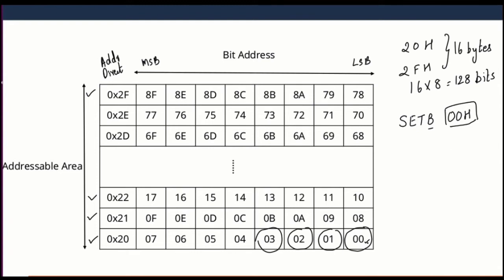This is where you need to understand the bit addressable concept. When any bit is given an address, 00H corresponds to the LSB of 20H. So when I am saying 00H, it is accessing the LSB of address 20H.